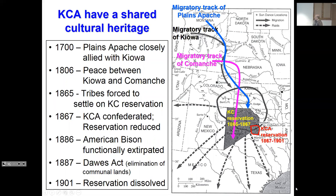In 1806, the Kiowa and Comanche made peace. In 1885, they were forced to settle — a familiar story in American Indian history. In 1867, they became confederated. By 1886, the American bison was functionally extirpated, which is significant. Being restricted and basically forced to become ranchers or farmers — which they were not — their economic base evaporated. That's one way to destroy a culture: destroy its economy.